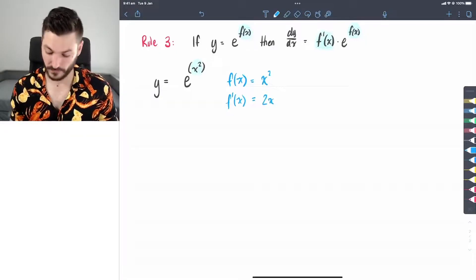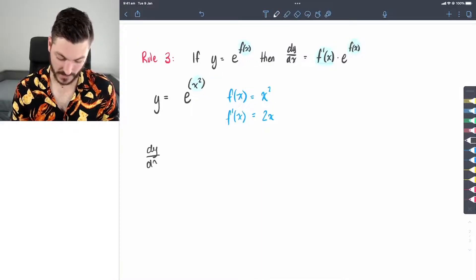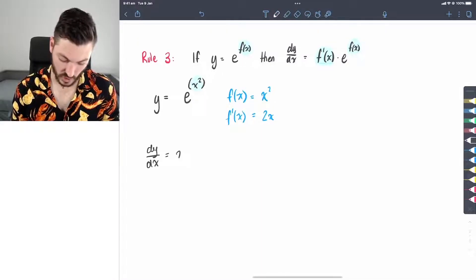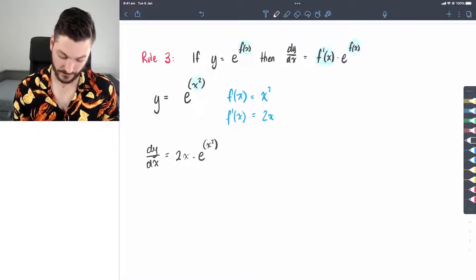So as you can see from the rule, this means that the derivative of y with respect to x is equal to 2x times by e to the x squared. Done.